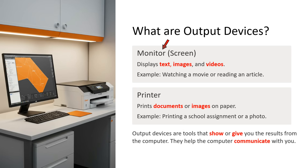The first output device is the monitor or screen, which displays text, images, and videos. For example, watching a movie or reading an article.